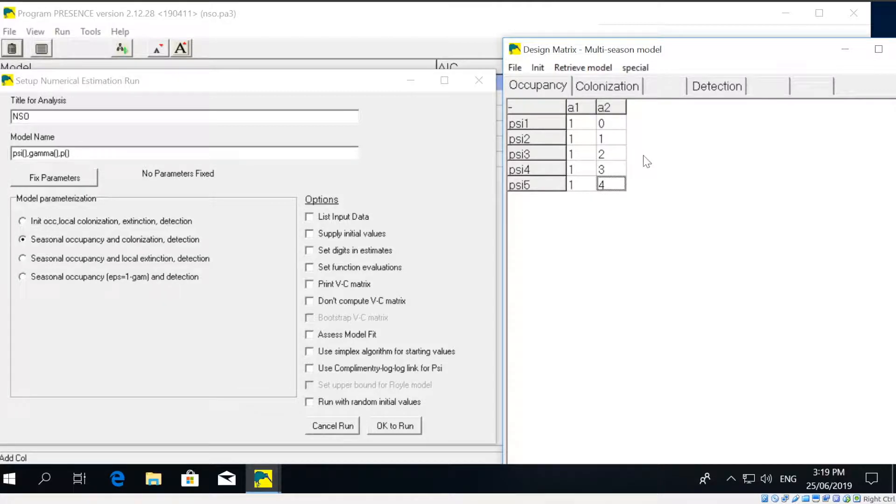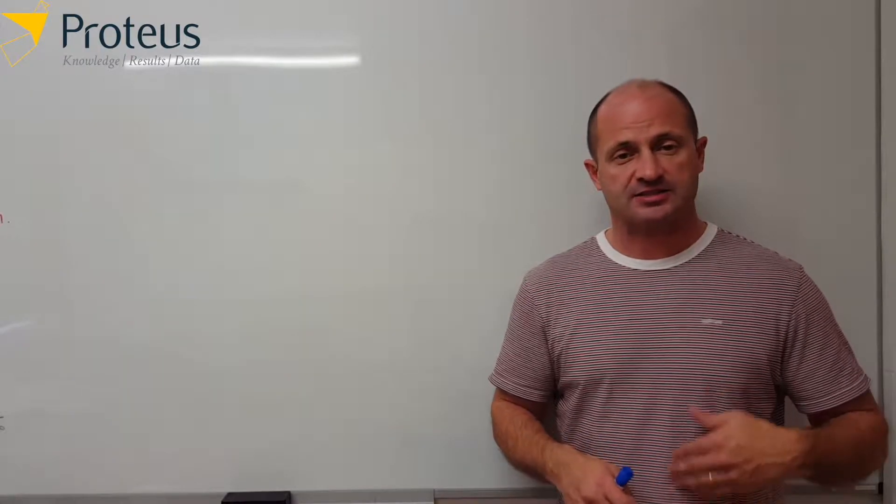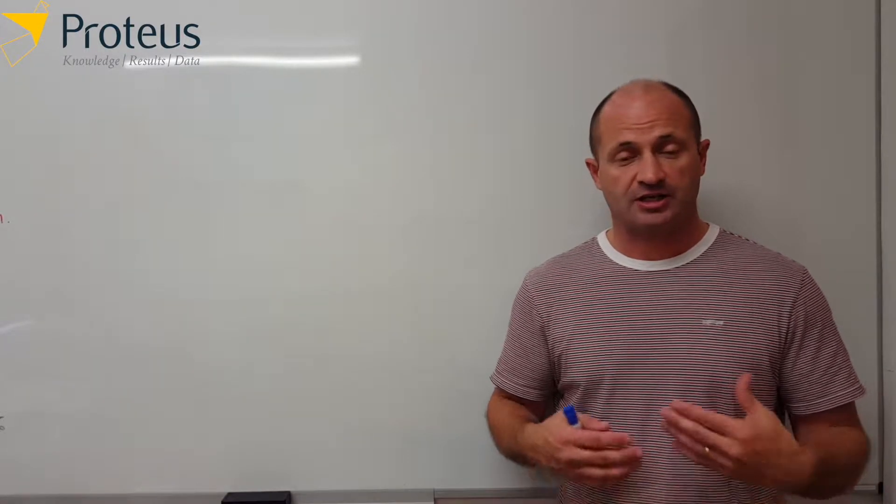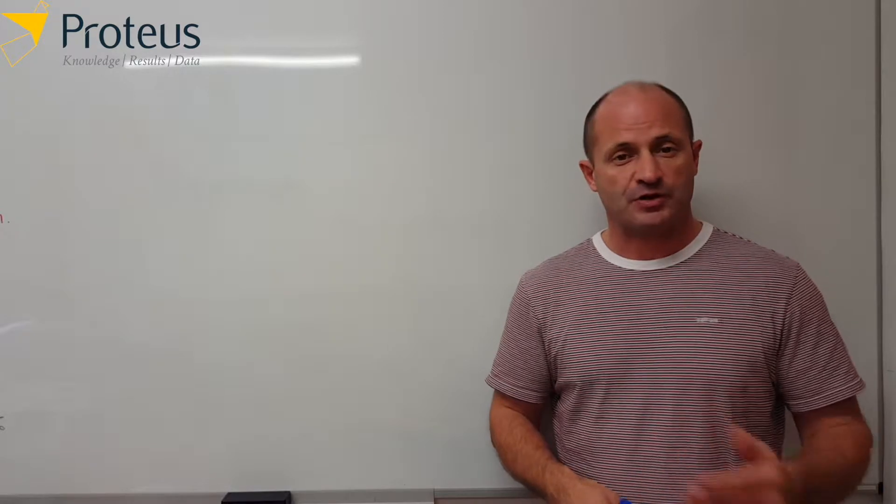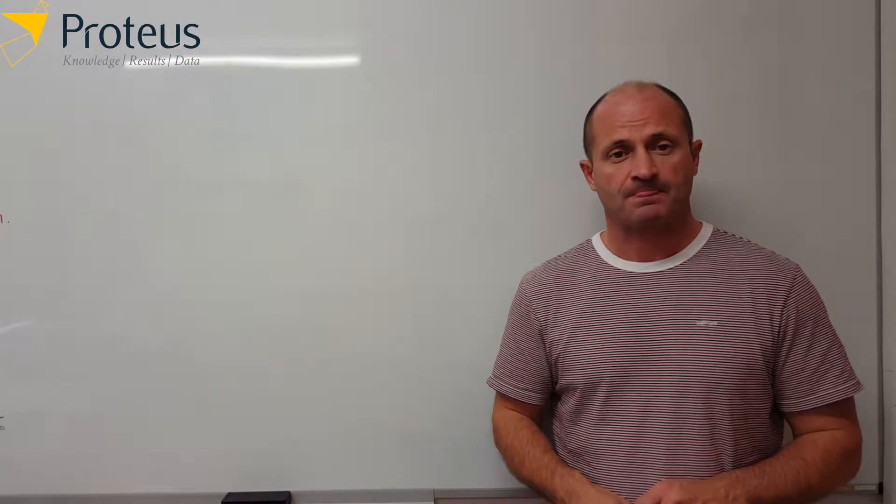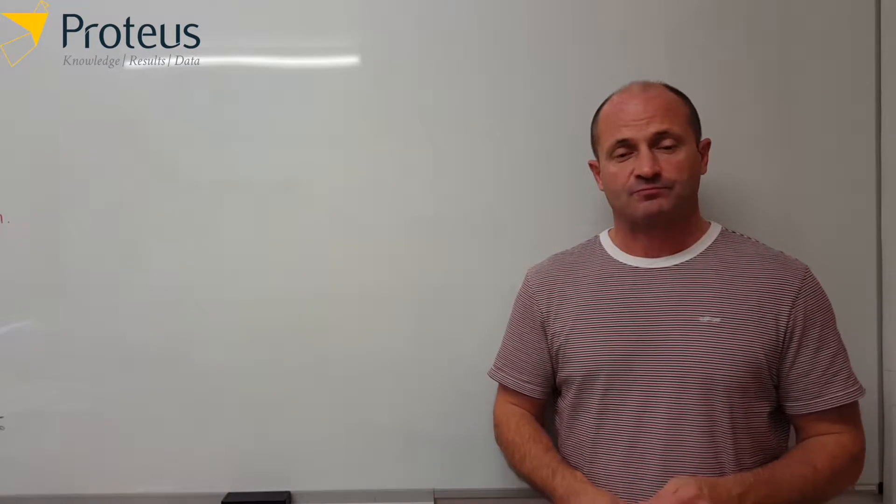And so essentially what that column is representing is time—it's the season of the study, or the season minus one if you like. And so by putting those consecutive series of numbers, what it does is it's going to make occupancy, at least on the logit scale, vary in a systematic way. Okay, so why do we do that?